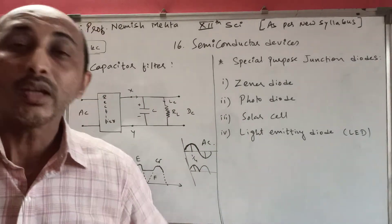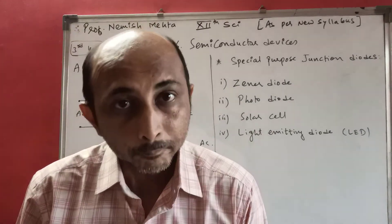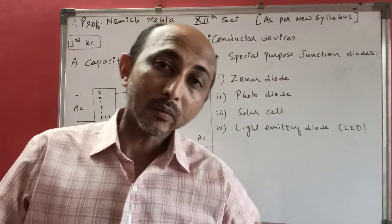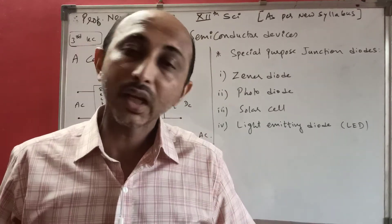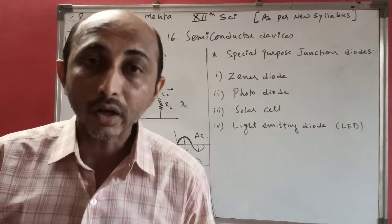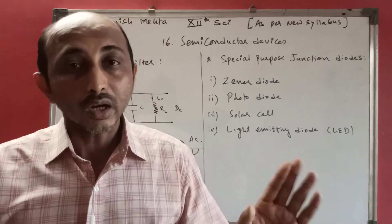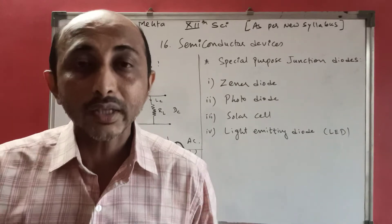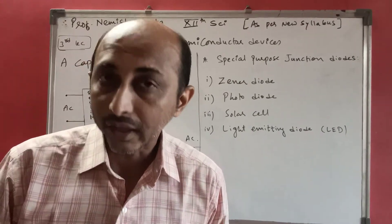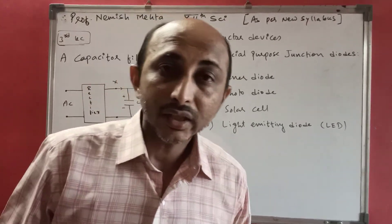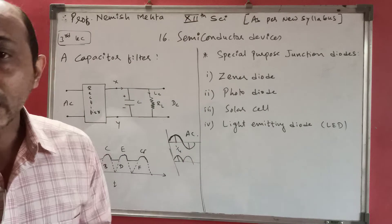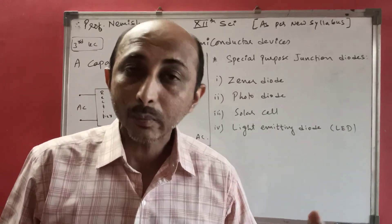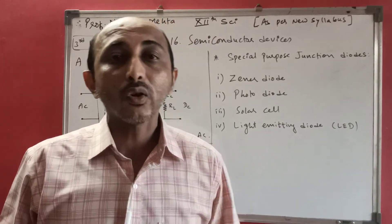If the supply is unregulated, we need to convert it into a regulated supply. There are many devices that convert unregulated power supply or unregulated voltage supply into a regulated voltage supply. One such device we will study is the Zener diode as a voltage regulator.